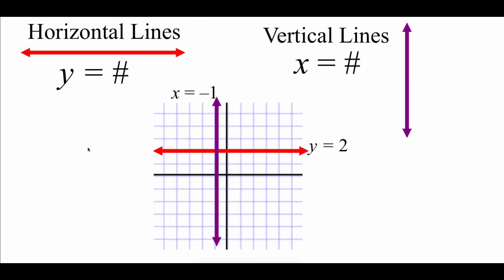There are a couple of special lines we could run into. A perfectly horizontal flat line occurs when our equation is just y equals some number — no x variable. For example, y equals 2 is a flat horizontal line through the y value of 2. A perfectly vertical straight up-and-down line occurs when the equation is x equals a number. For example, x equals negative 1 is a vertical line through the x value of negative 1. That's it for this video — thanks for watching.